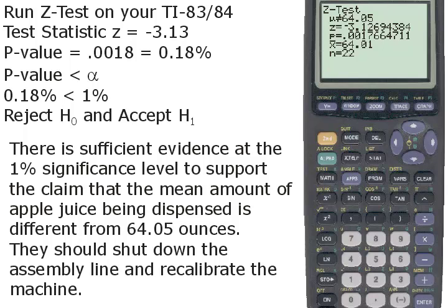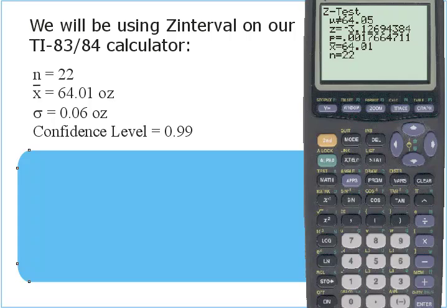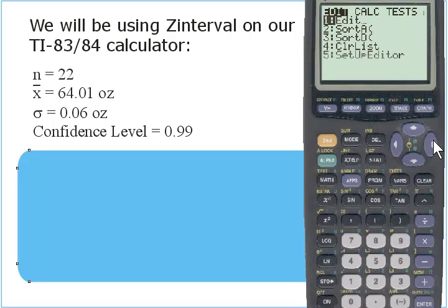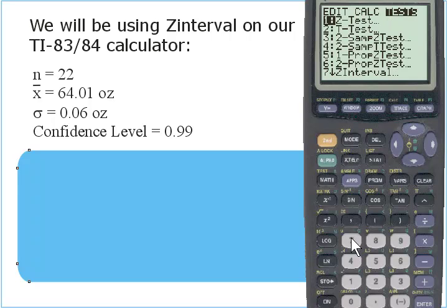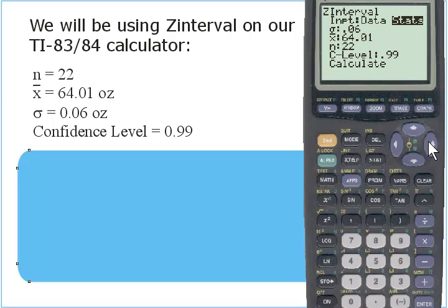So let's follow up our hypothesis test with a 99% confidence interval for the population mean. We will be using z-interval on our TI-83/84 calculator. Press the STAT key, then the right arrow key twice to highlight TESTS. Press 7 to select z-interval. Highlight STATS and press ENTER if you need to. All the values for the standard deviation, mean, and sample size are already there — that will always happen if you follow up a hypothesis test with a confidence interval. We only need to enter in our confidence level of 99%, so enter 0.99 for C-level.